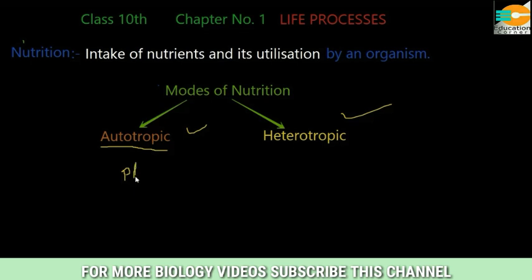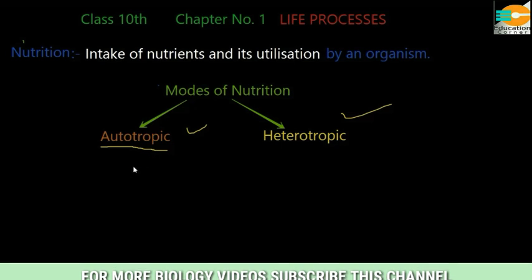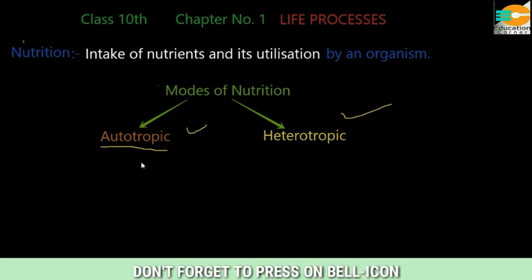Plants make their food with the help of the process called photosynthesis. Photo means light and synthesis means process. In photosynthesis, they use inorganic raw materials such as carbon dioxide, water, and mainly the chlorophyll present in the leaves; sunlight is also very important. These four — water, carbon dioxide, chlorophyll, and sunlight — are mainly important. All those plants which make their own food through photosynthesis follow autotrophic nutrition.